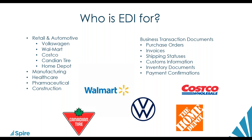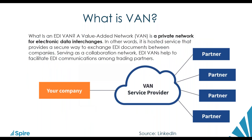Let's talk about how this electronic document interchange works. There are two basic types of EDI transmissions. The first is a point-to-point or direct connection, where two computers or systems connect with no intermediary over the internet, generally using secure protocols — your company connects directly to a supplier, possibly more than one.